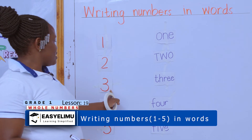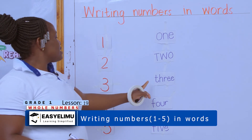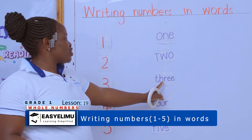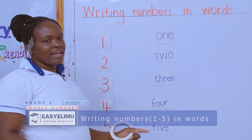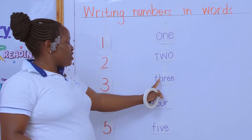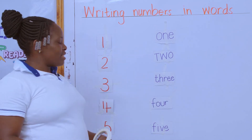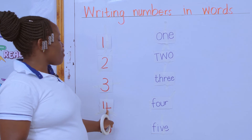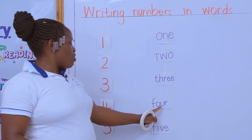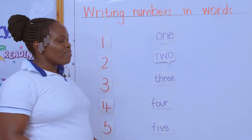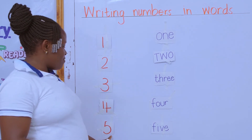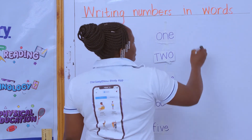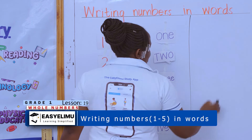Then 'three' is the number: T-H-R-E-E, double E. Then we come to 'four' — the word is F-O-U-R, 'four.' Then lastly we have 'five': F-I-V-E.